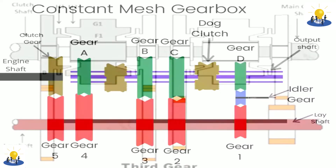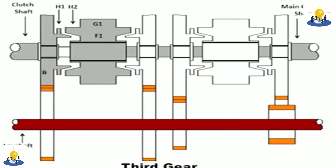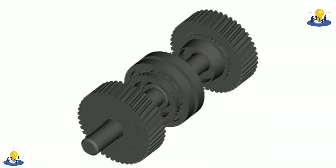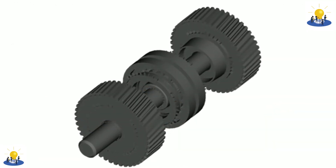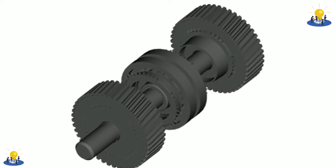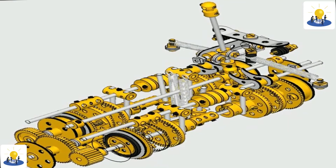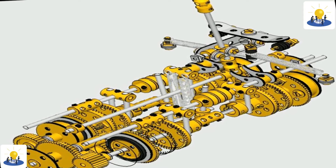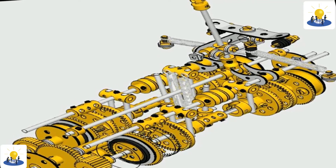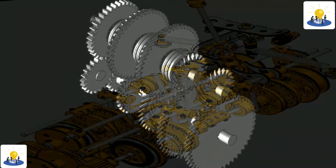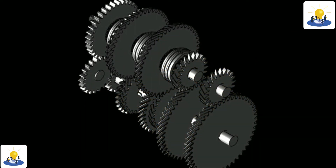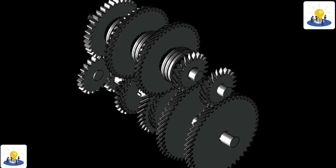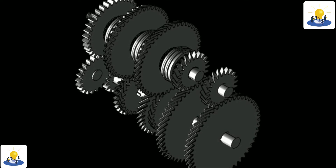The need for synchromesh in a constant mesh transmission is that the dog clutches require the input shaft speed to match that of the gear being selected; otherwise, the dog teeth will fail to engage and a loud grinding sound will be heard as they clatter together. Therefore, to speed up or slow down the input shaft as required, cone-shaped brass synchronizer rings are attached to each gear. When the driver moves the gearshift lever towards the next gear, these synchronizer rings press on the cone-shaped sleeve on the dog collar so that friction forces can reduce the difference in rotational speeds. Once these speeds are equalized, the dog clutch can engage and thus the new gear is now in use.